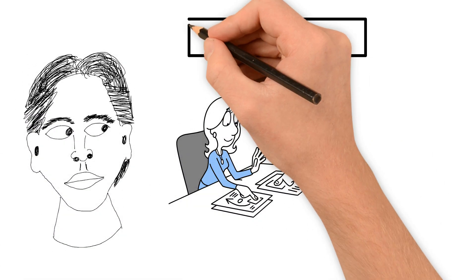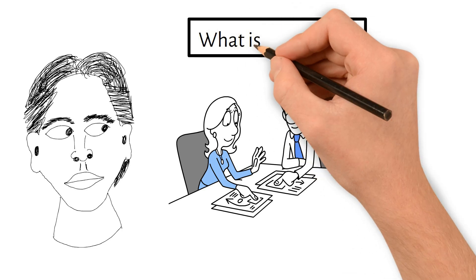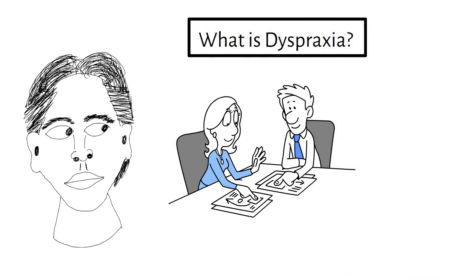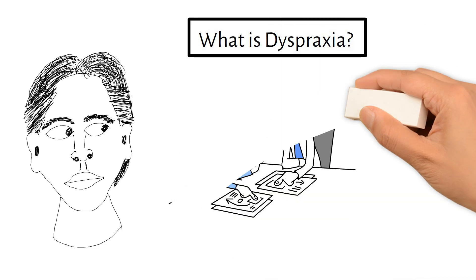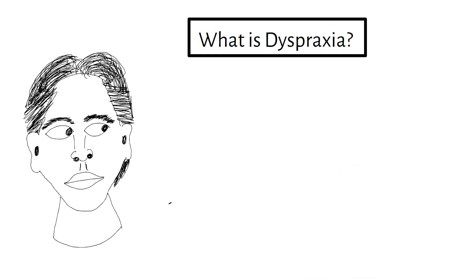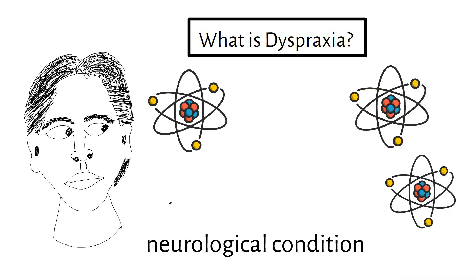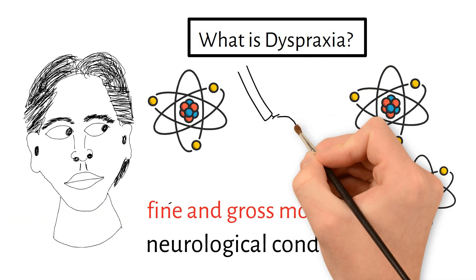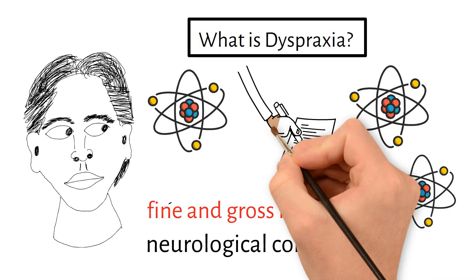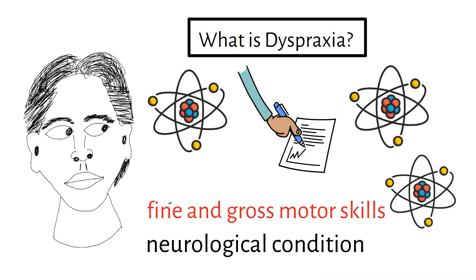Part 1. What is dyspraxia? Dyspraxia also known as developmental coordination disorder, DCD, is a neurological condition that affects motor coordination and planning. It can impact fine and gross motor skills, making activities like writing, tying shoelaces and physical coordination difficult.